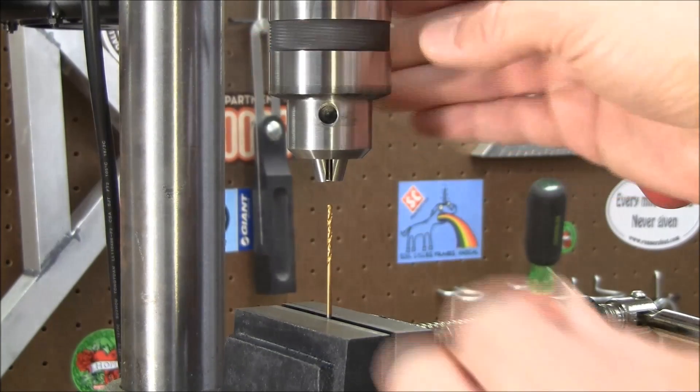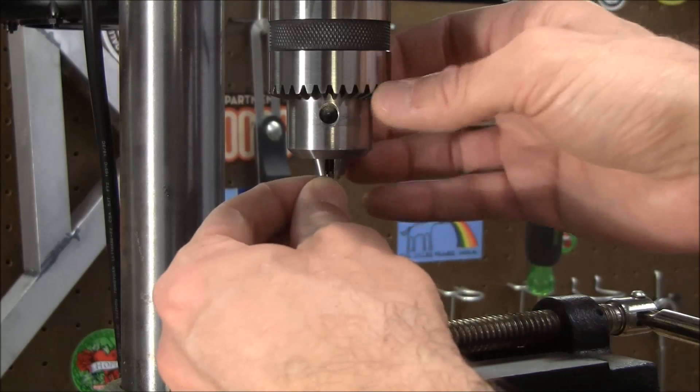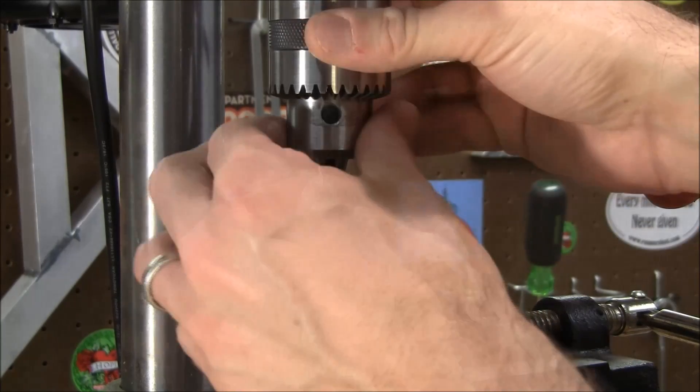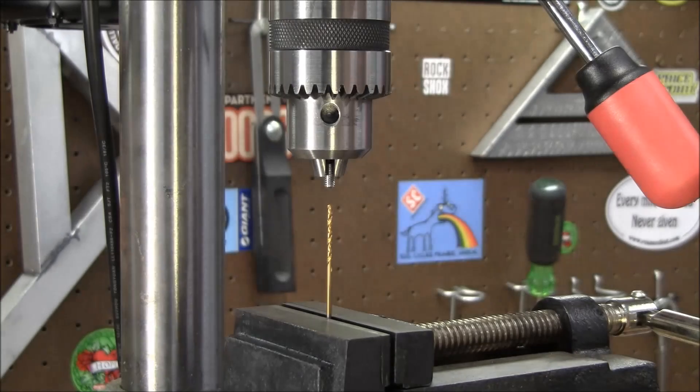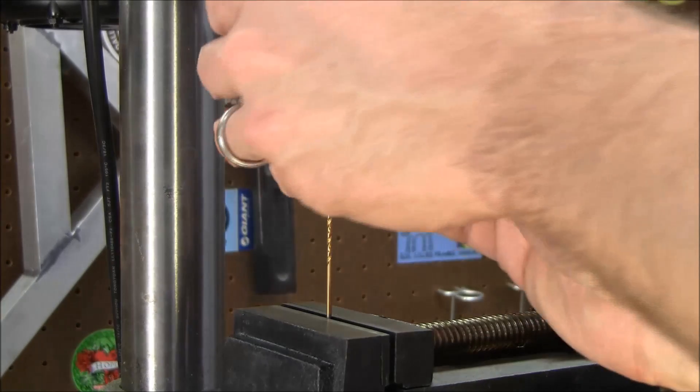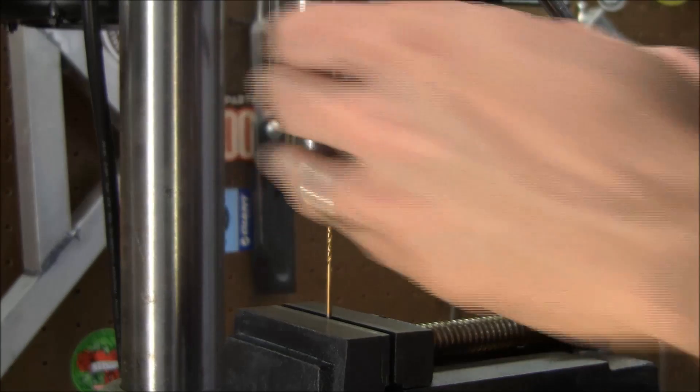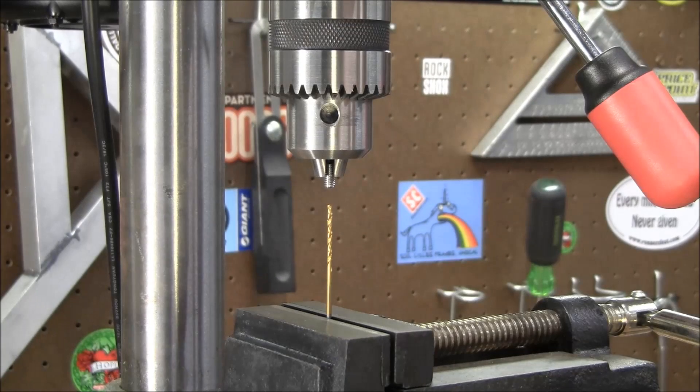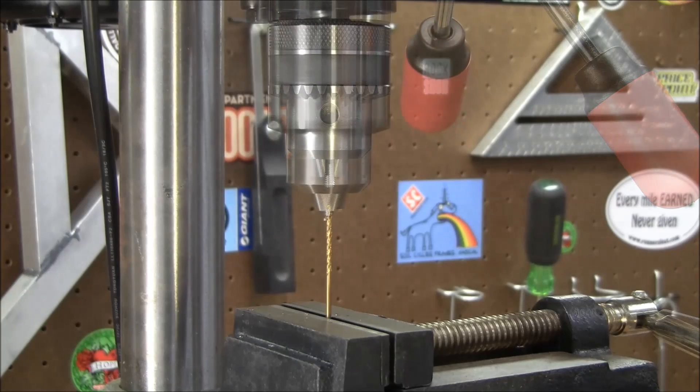Next we take our set screw and insert it into the drill press. You don't want to over tighten the set screw in there. If you do, you'll damage the threads of the set screw. If it's too loose, the set screw is going to spin around when we drill it out.